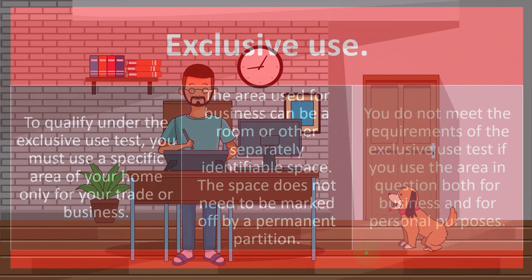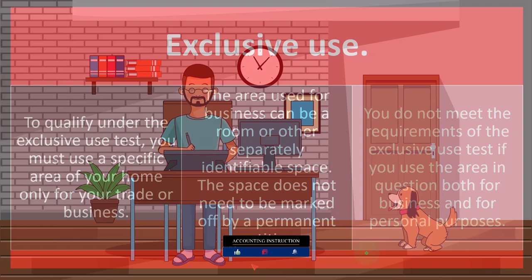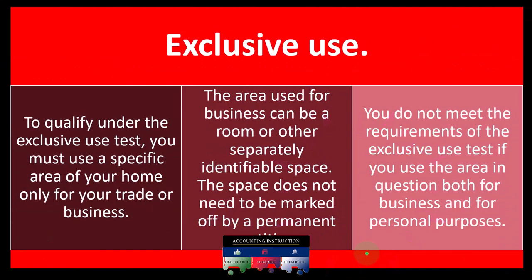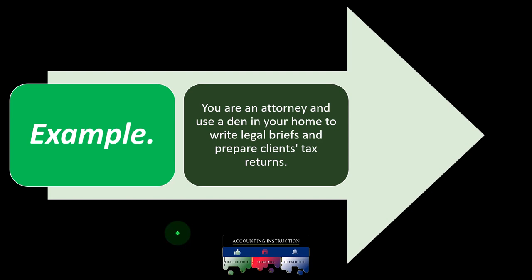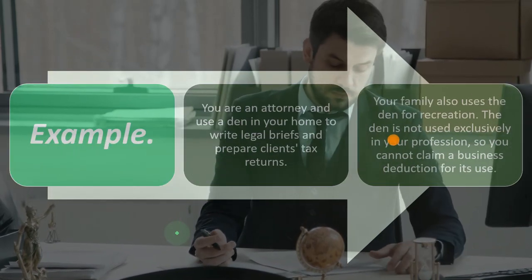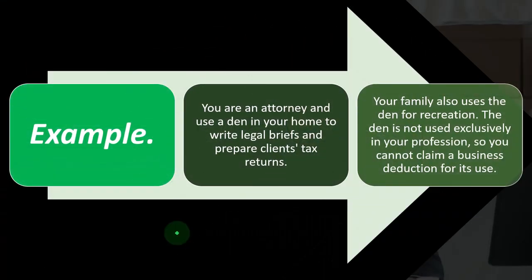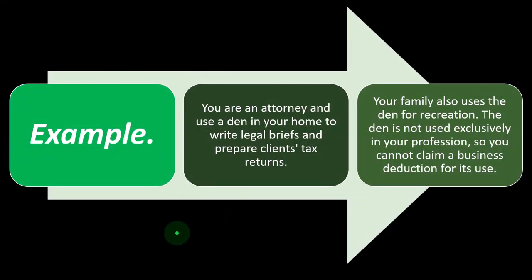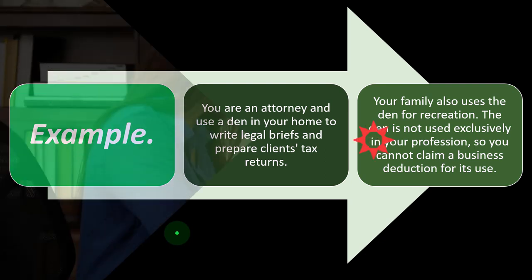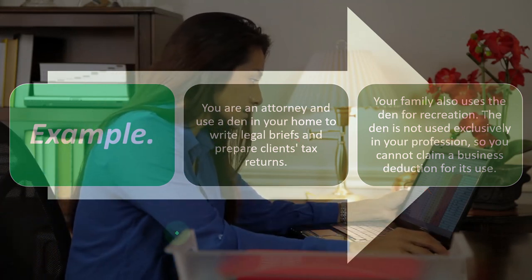You do not meet the exclusive use test if you use the area in question both for business and for personal purposes. For example, if you do some work on your laptop in your bed, you can't call that a business office because personal activities happen in that same area. Example: you are an attorney and use a den in your home to write legal briefs, but your family also uses the den for recreation — the den is not used exclusively for your profession.